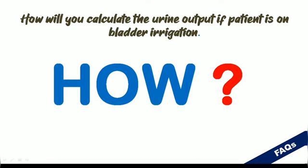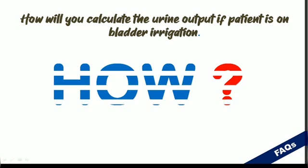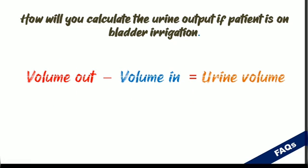How will you calculate urine output when a patient is on bladder irrigation? Volume out minus volume in gives the exact urine volume. Remember: the output is always greater than the amount of irrigation solution being infused.